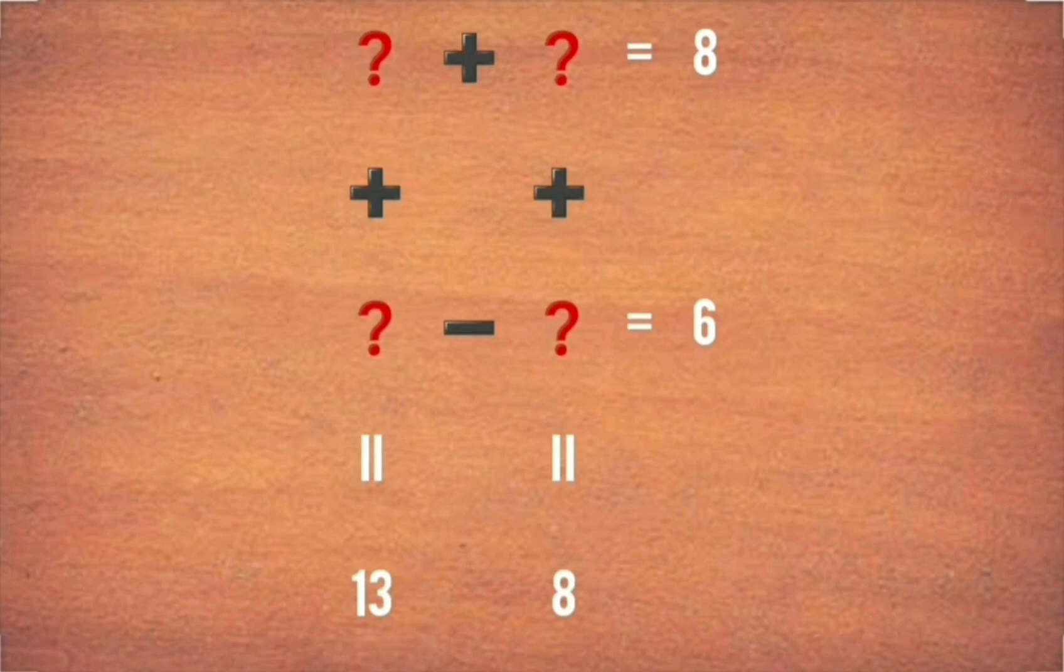Vertically, adding a number with some other number gives 13 in the first row. In the second row, adding a number with some other number gives 8.